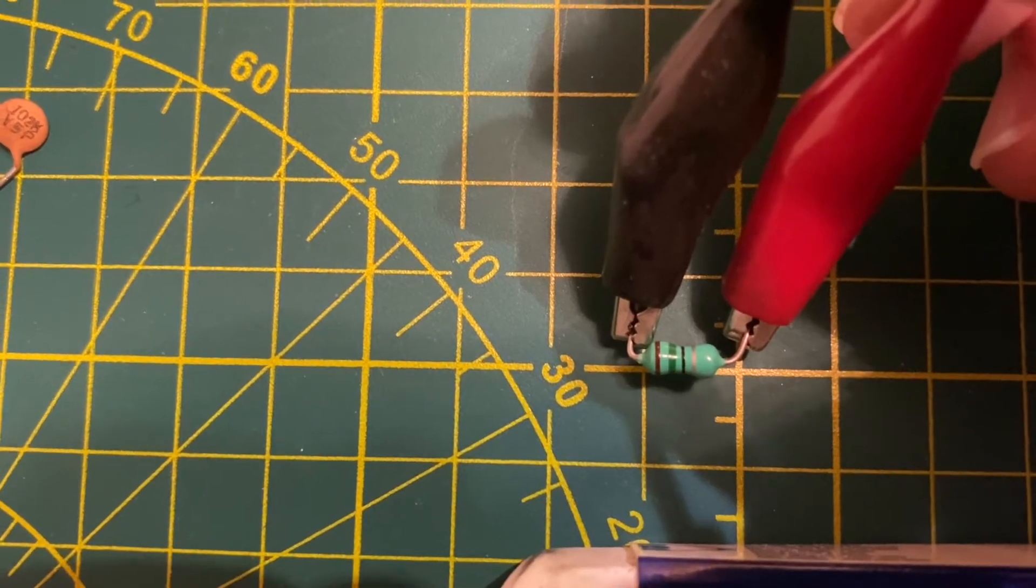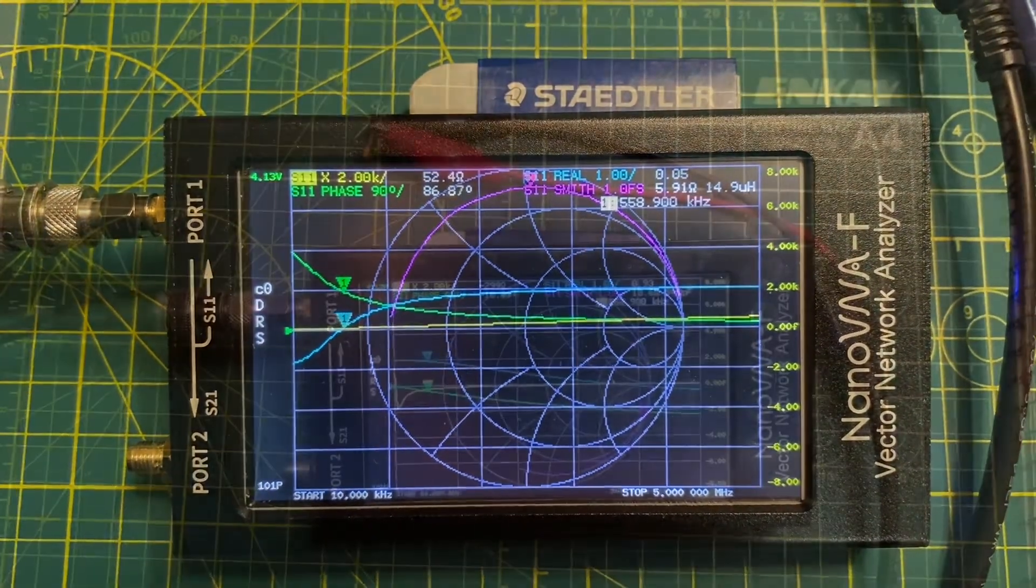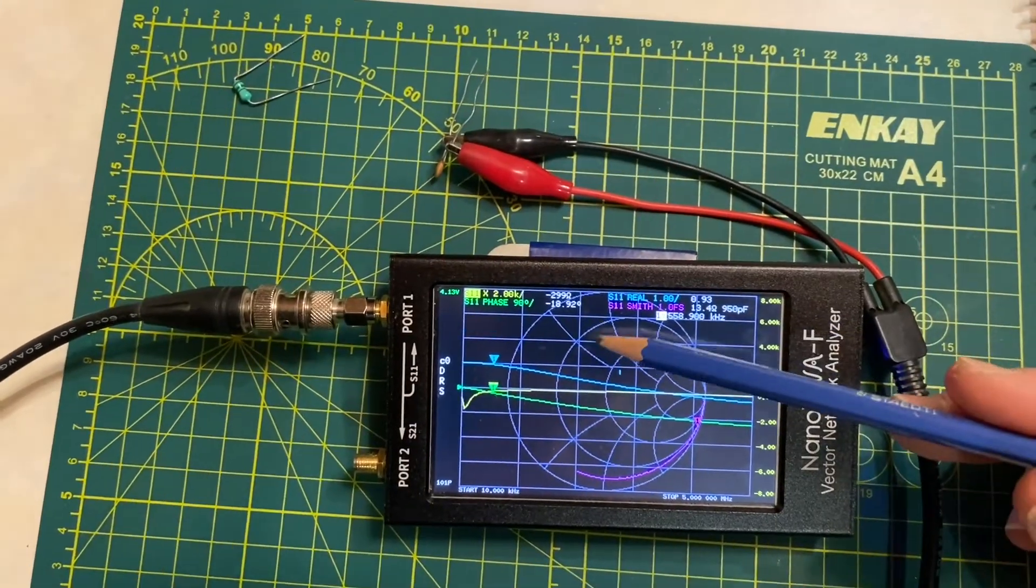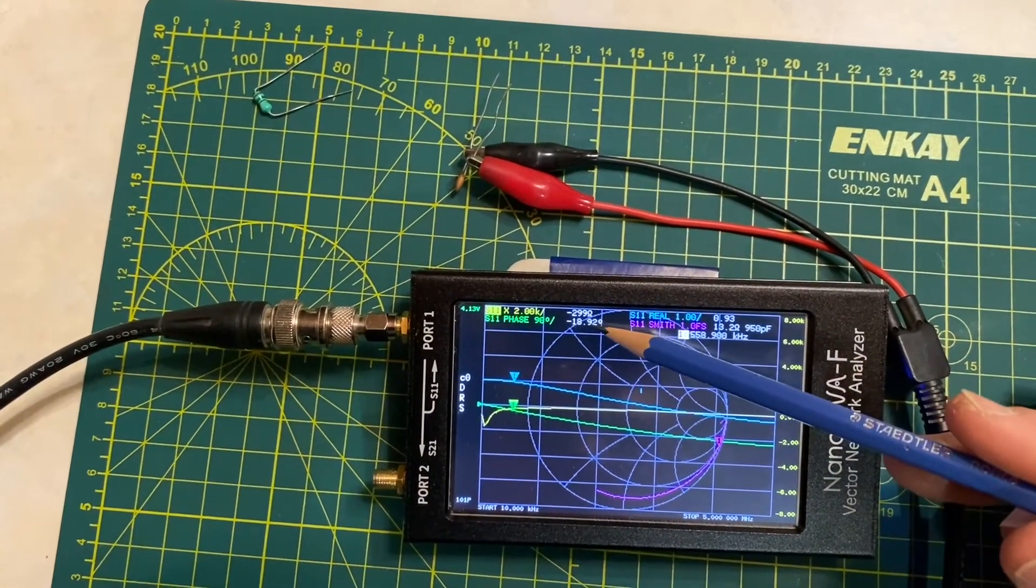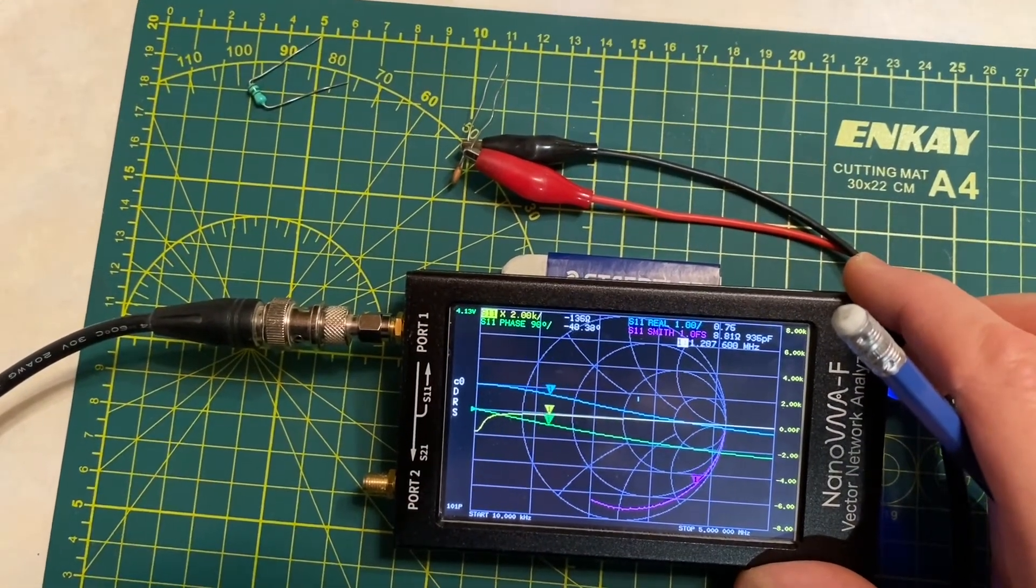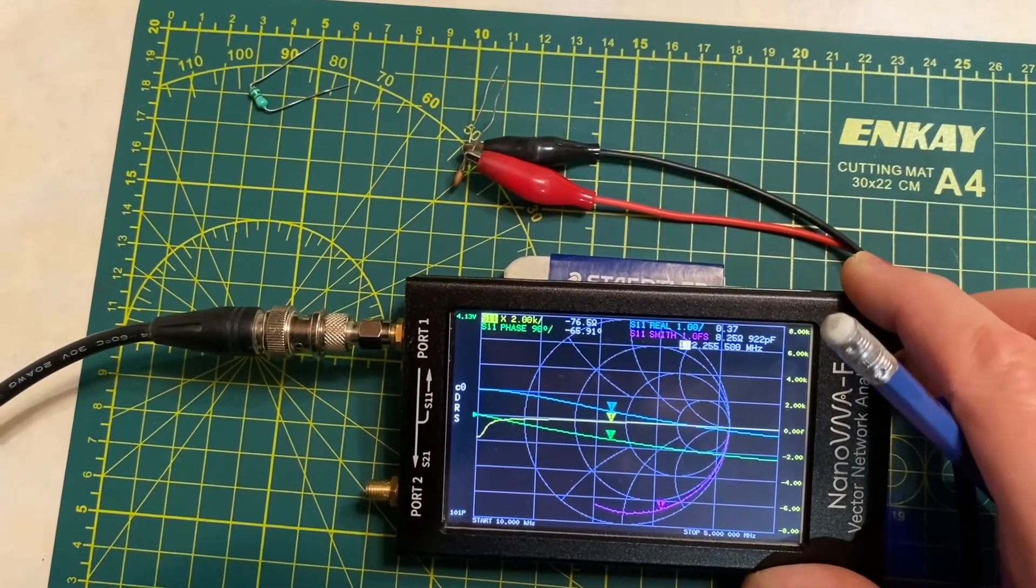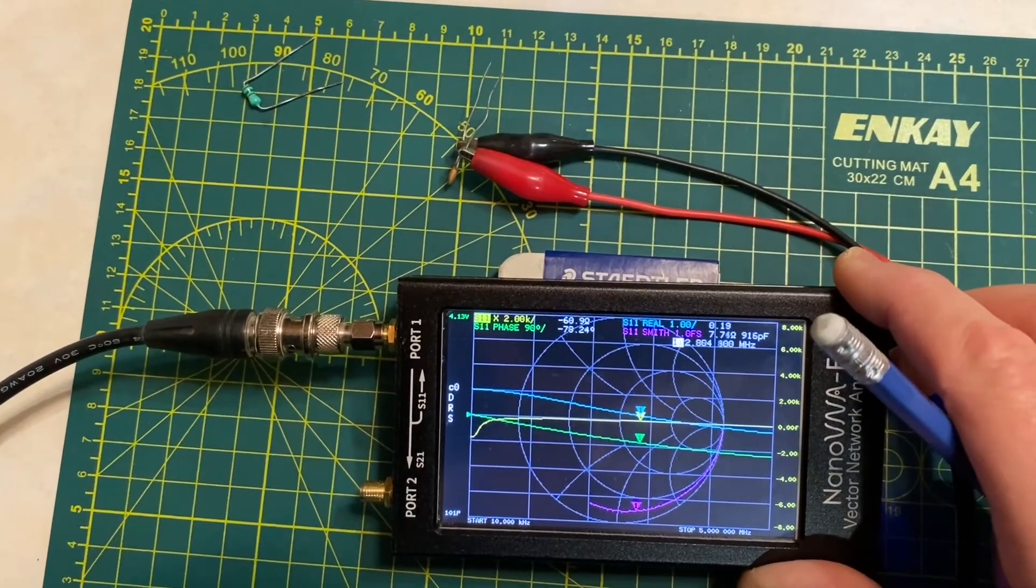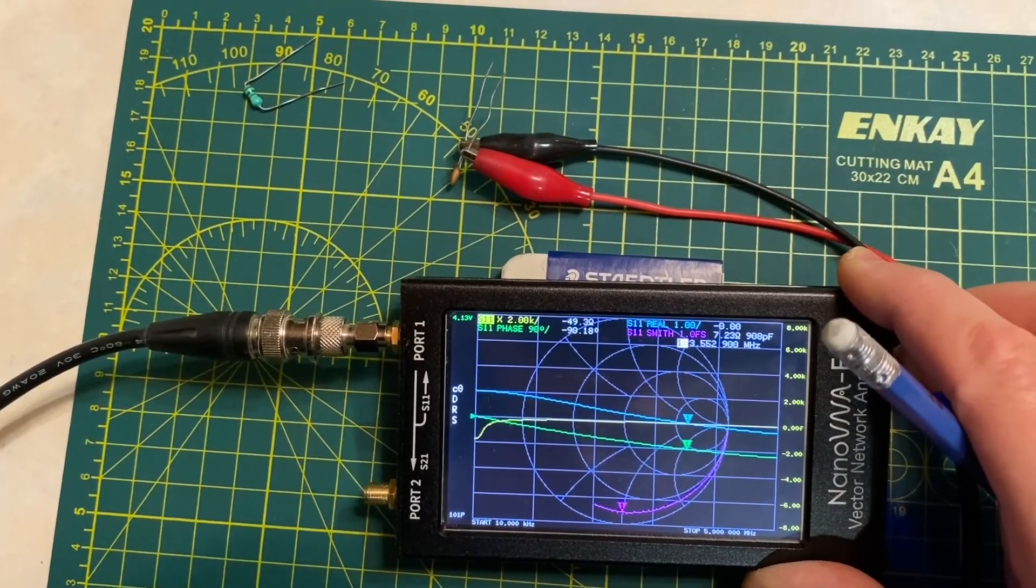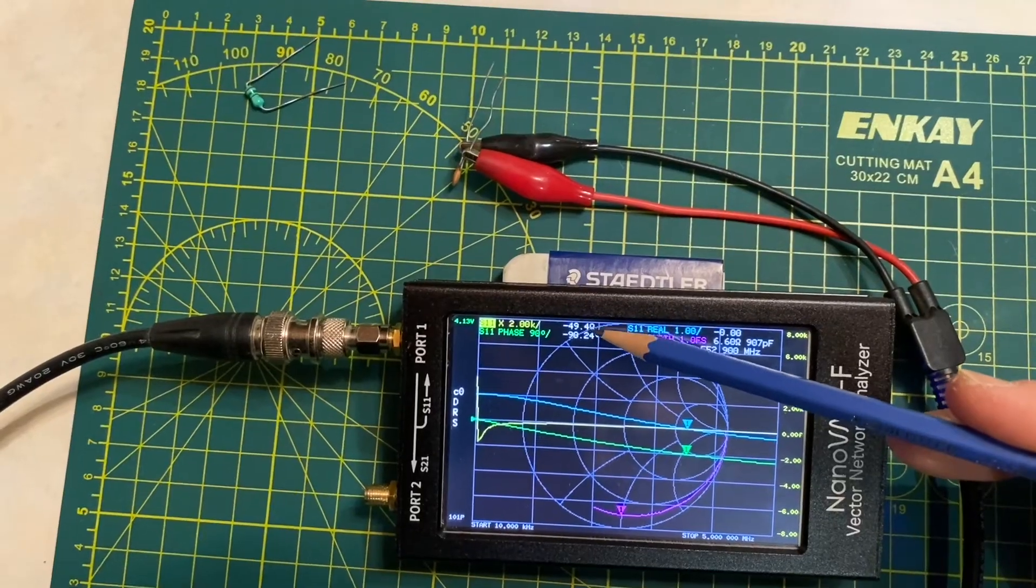I've got my capacitor hooked up here now. Let's see if we can use this same method to determine the value of this capacitor. I'm once again going to go to that 50-ohm point where the reactance is equal to the transmission line impedance.